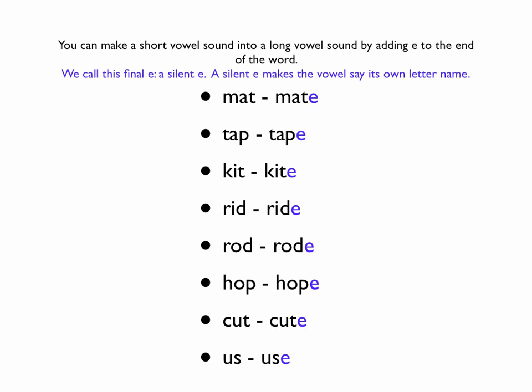'Tap' has the short vowel sound for A. If we put the silent E on the end of 'tap,' the word becomes 'tape.'